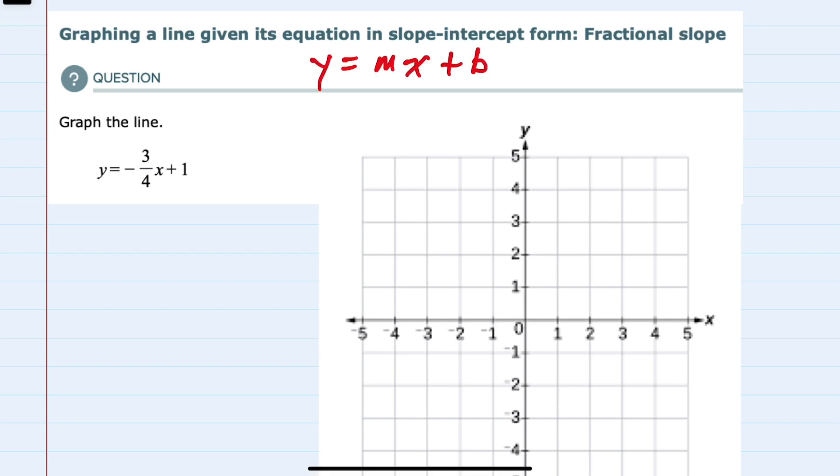The two things we need to recall is that first, slope-intercept form is y equals mx plus b, where m is the slope and b is the y-intercept.